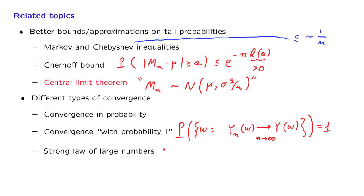That is, we have that the sample mean converges to the true mean with probability 1. This is the so-called strong law of large numbers. And because this is a stronger notion of convergence, a more demanding one, that's why this is called the strong law.